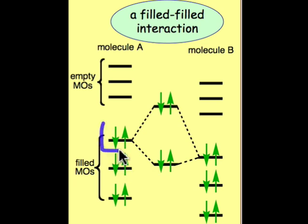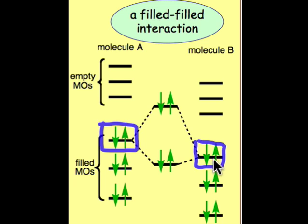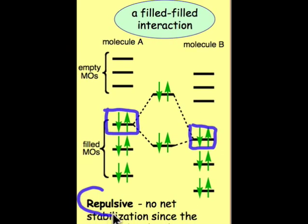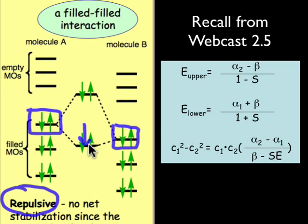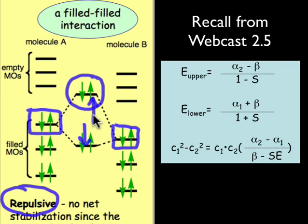Let's take as an example of the filled-filled interaction: this molecular orbital and its energy, filled with a pair of electrons, interacting with this orbital energy on molecule B. Two new molecular orbitals will result. Both of them have electrons, and we'll conclude that this is actually a repulsive interaction. Why is that? Well, the energy of stabilization is not as large as the energy of destabilization. Since both of these orbitals are occupied with electrons, the added energy of destabilization contributes to a repulsion — it's a destabilizing interaction.